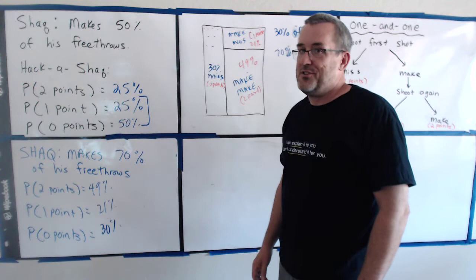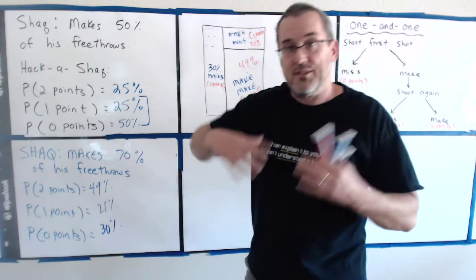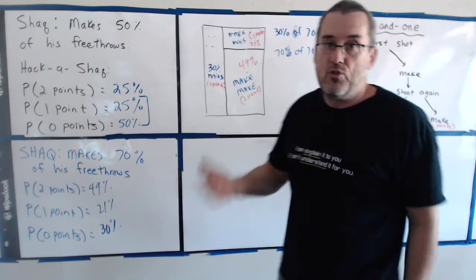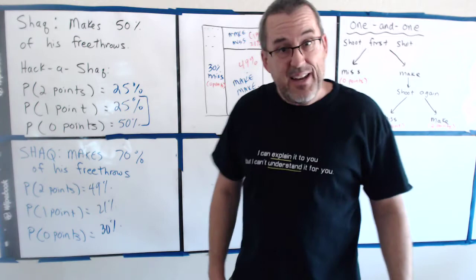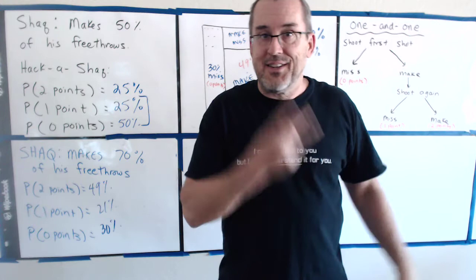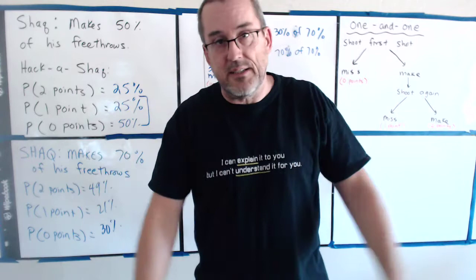So, what does this mean? If in this scenario, the 70% free throw shooting Shaq, if he does this one-on-one situation over and over and over again, a bazillion times, then 49% of the time, 49 out of every 100 times, he's going to get 2 points. 21 out of every 100 times, 21% of this bazillion times, he's going to get 1 point. And then, 30 out of every 100, he's going to get 0 points. That's what the probability means.